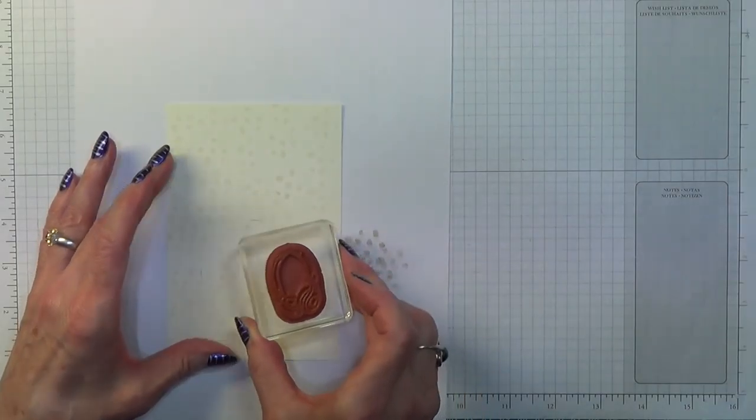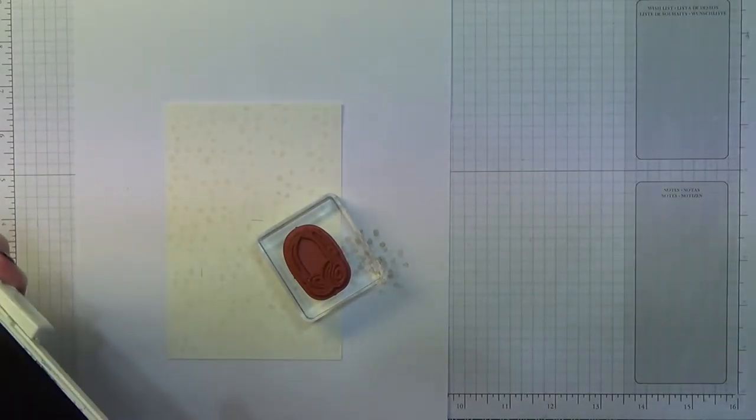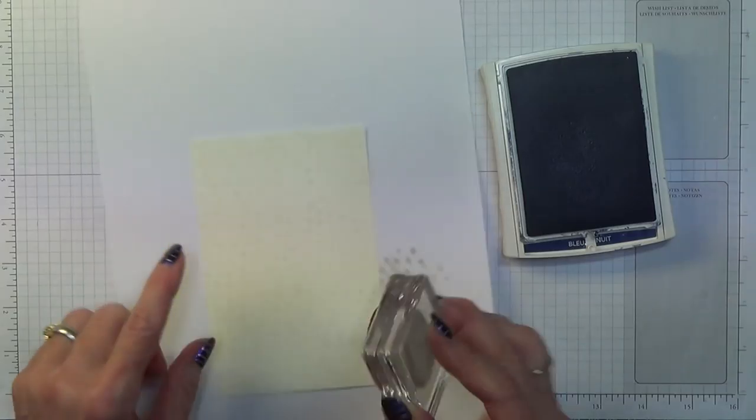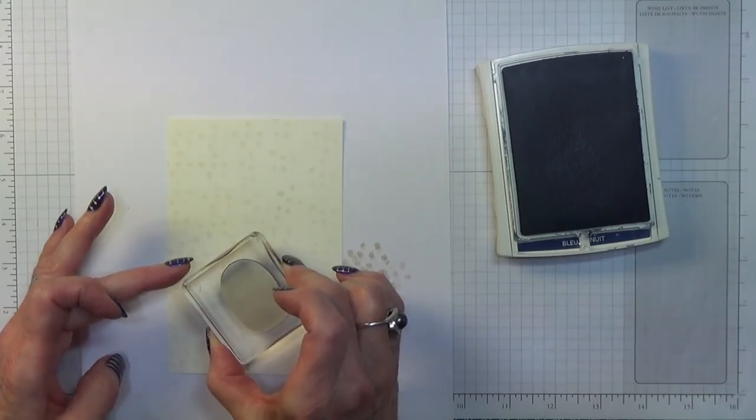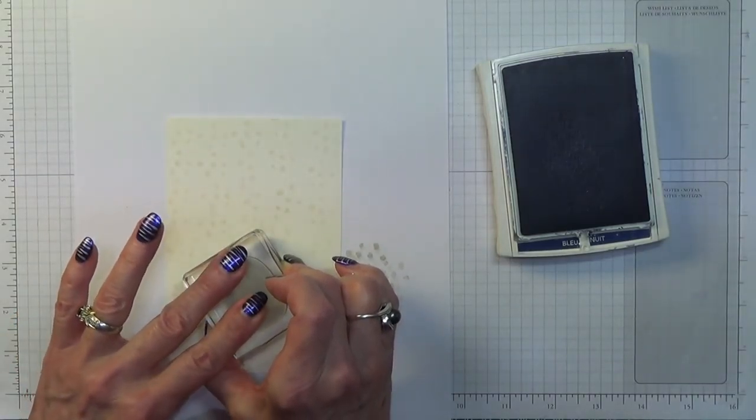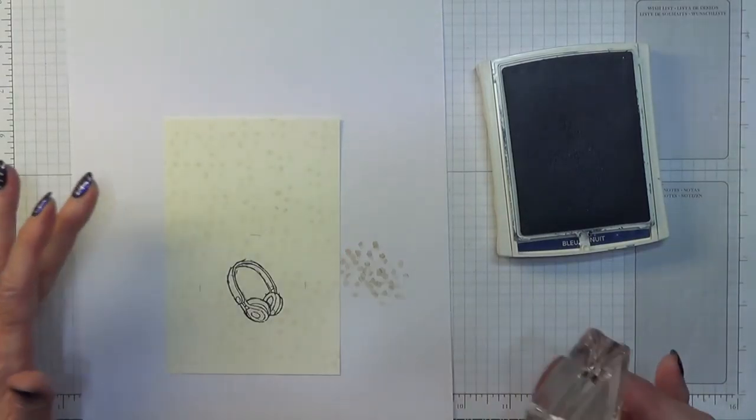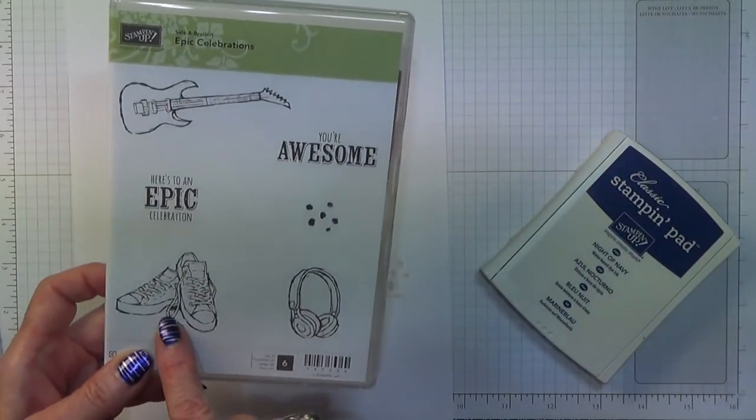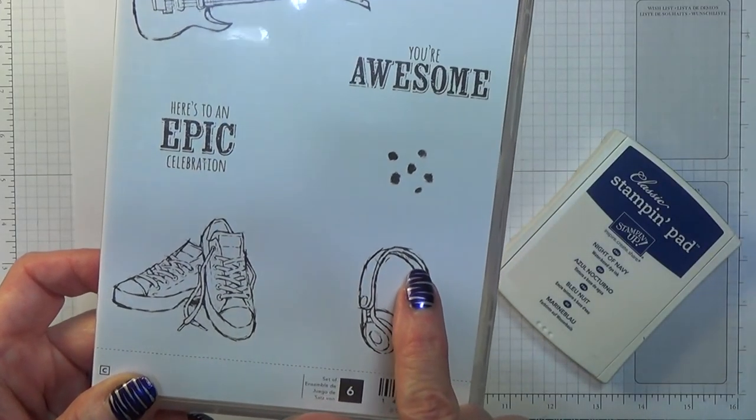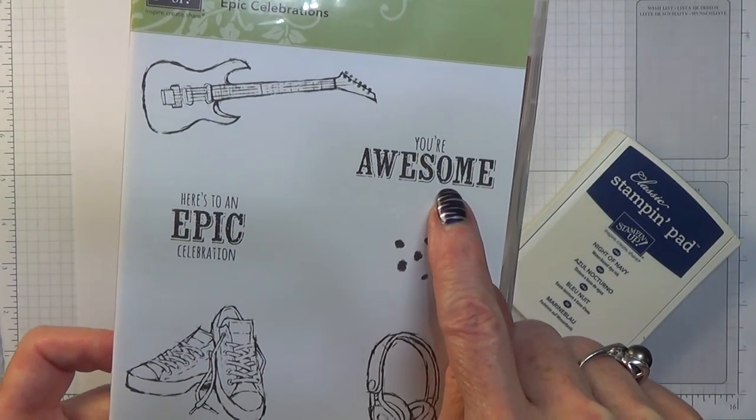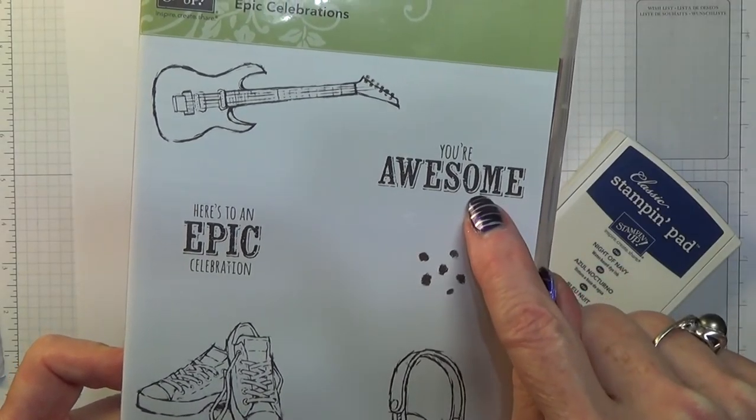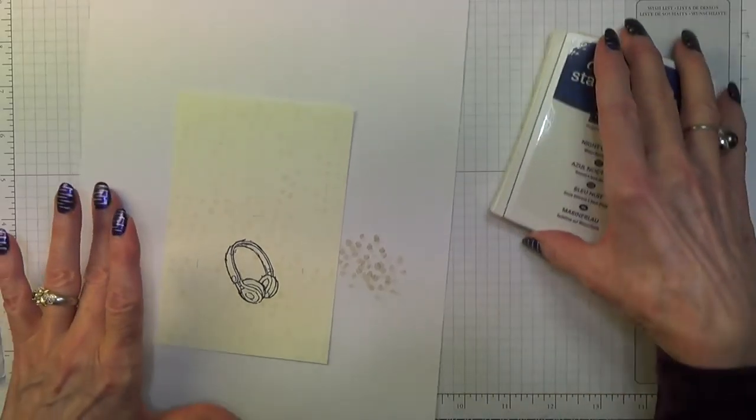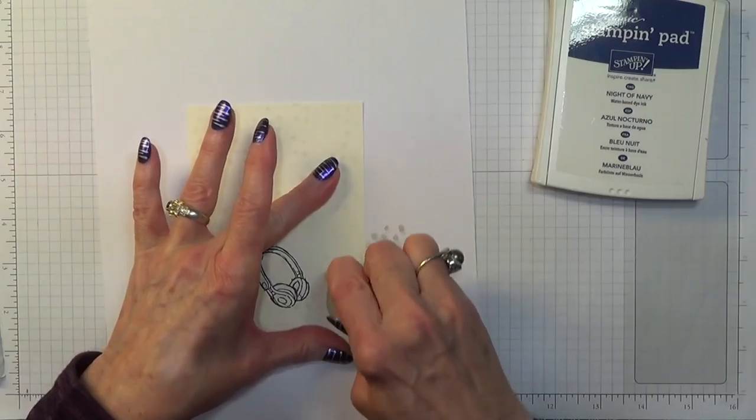I think by the time I stamp the headphones and I've colored the headphones I think it'll cover up anything that gets shown through here. There is no right or wrong which direction it goes so I'm doing this without my stamp-a-ma-jig. Night of Navy ink and I'm just going to get it as much in the center there as I can. I'm doing it at an angle. There we go. The outline of the guitar, the sneakers and the headphones is like sketches so you've got the lines on the outside.